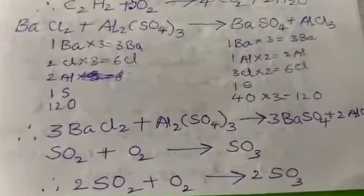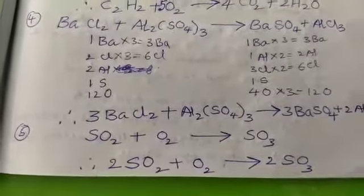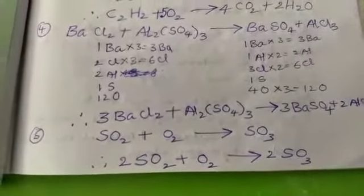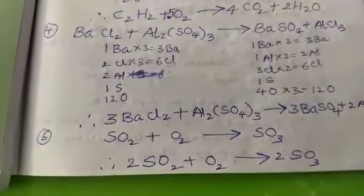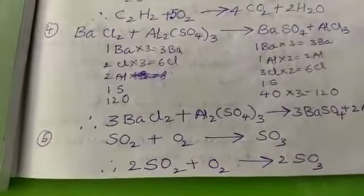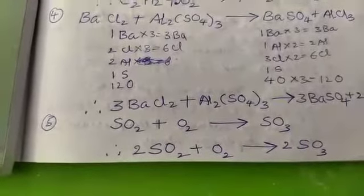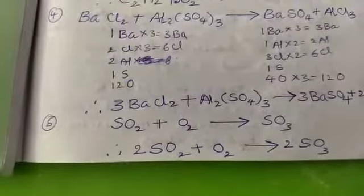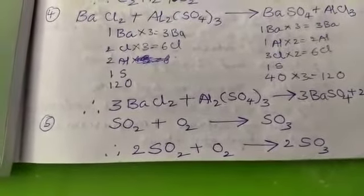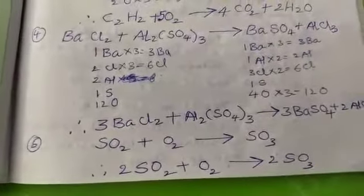The last one, SO2, sulfur dioxide, plus oxygen gives sulfur trioxide. Therefore, after balancing, we get 2SO2 plus O2 gives 2SO3.